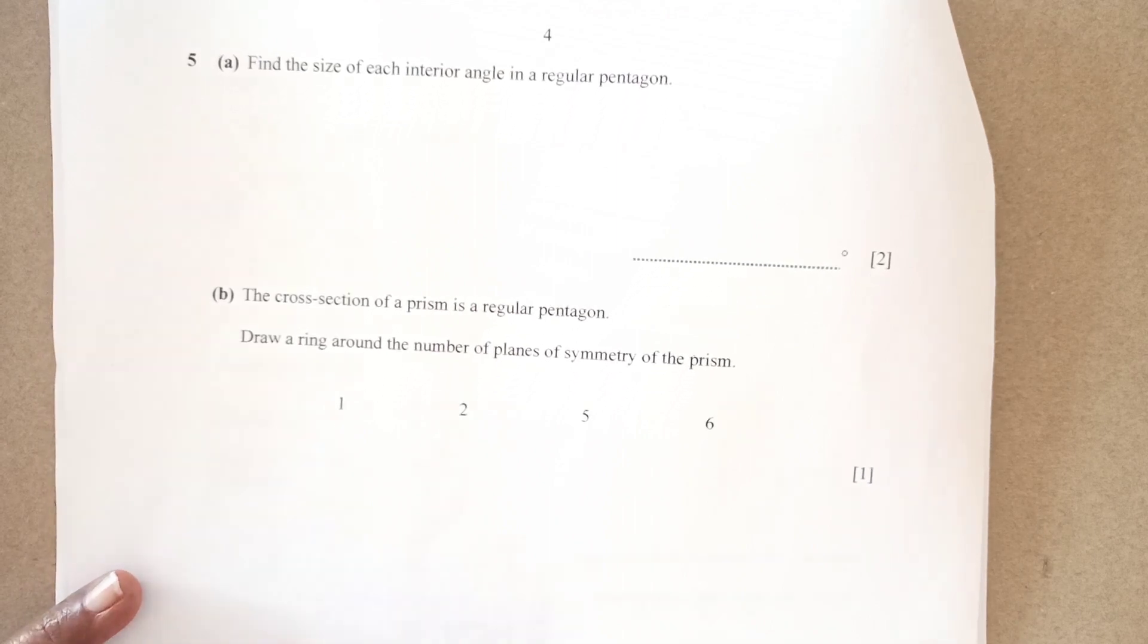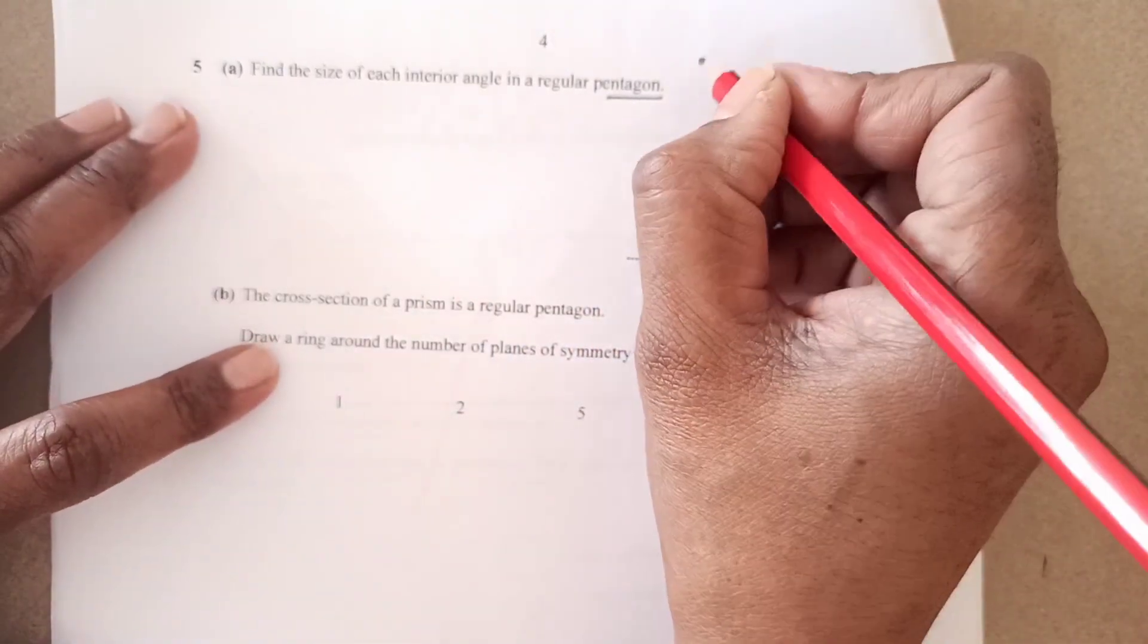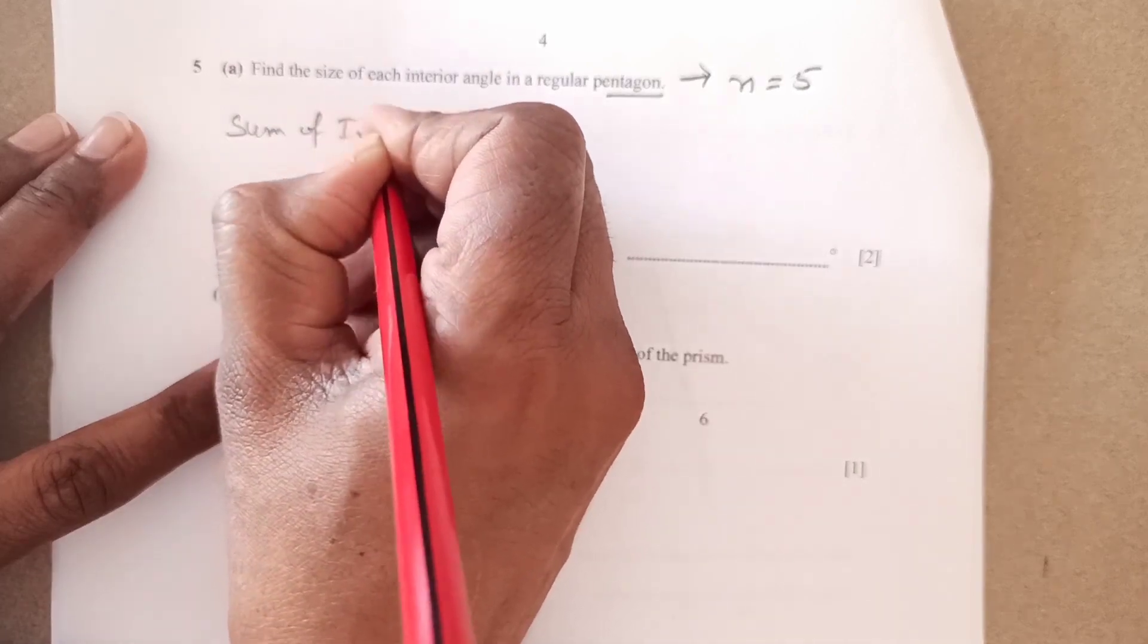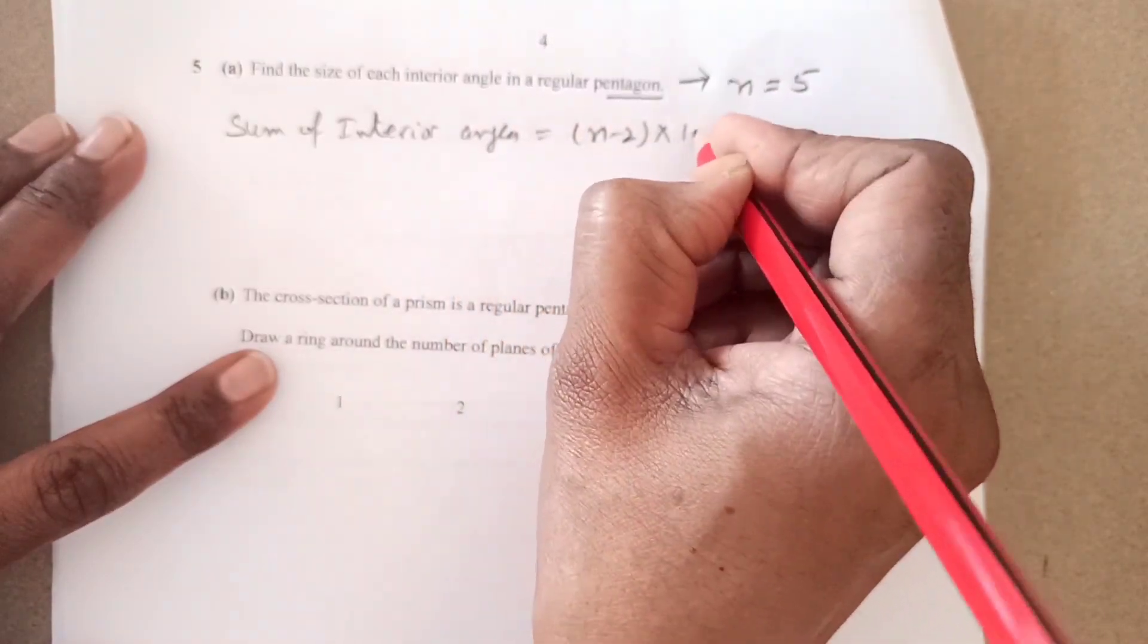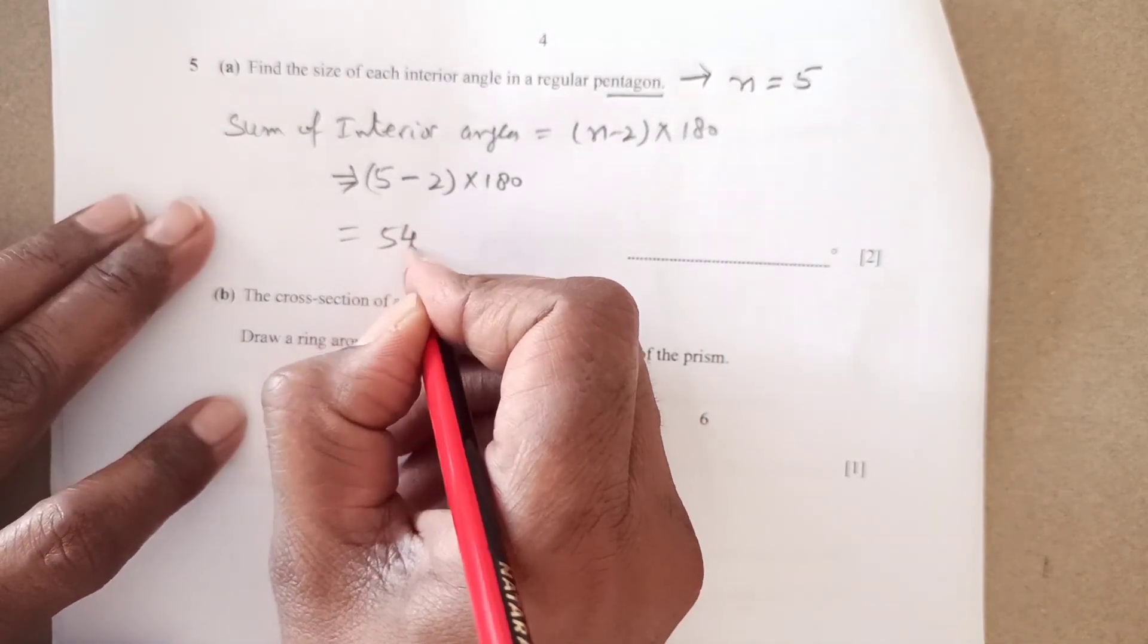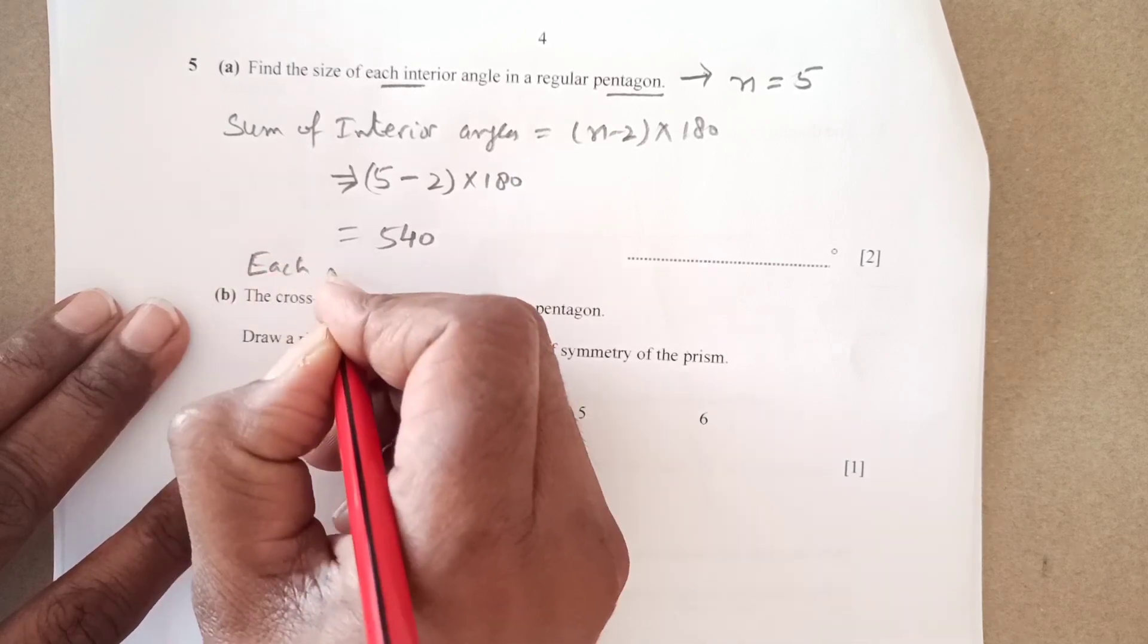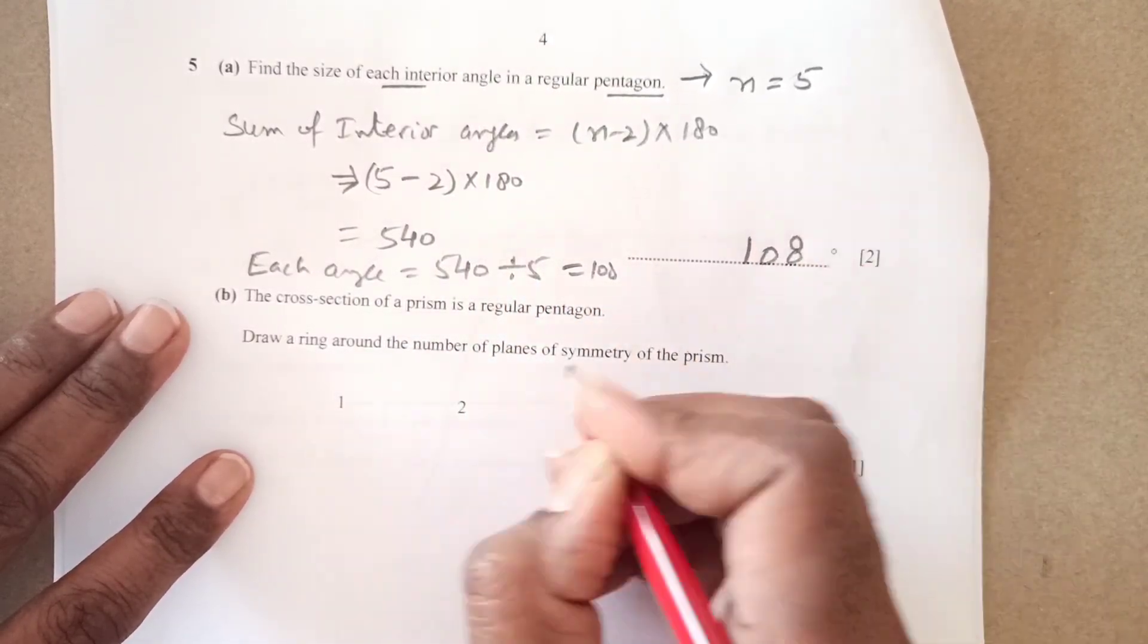The next one number 5A. Find the size of each interior angle in a regular pentagon. Pentagon is a diagram shape having number of sides as 5. Sum of interior angles. The formula of sum of interior angles is n minus 2 times 180. n is 5 here. 5 minus 2 times 180. This is 3 times 180 which is 540. And what is our question? Our question is find the size of each interior angle. Each angle is going to be 540 divided by 5. This is 108 degrees.